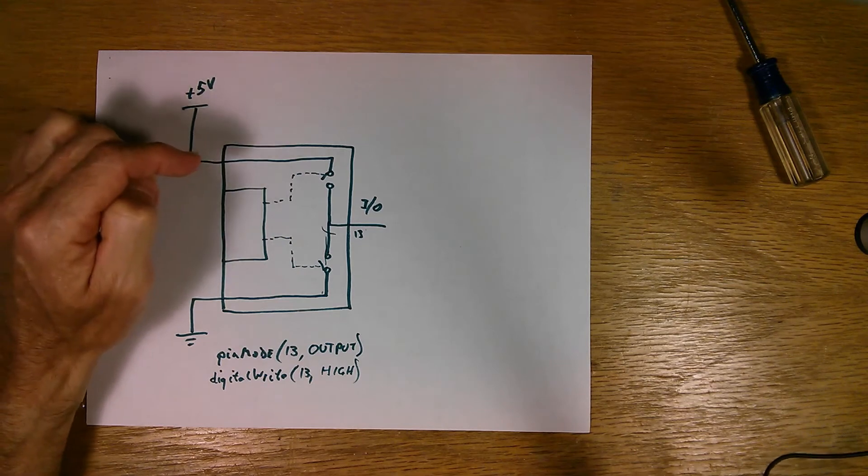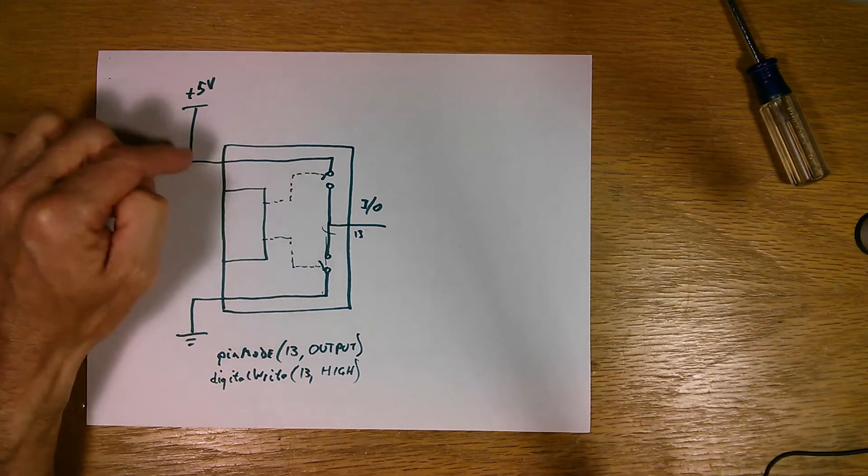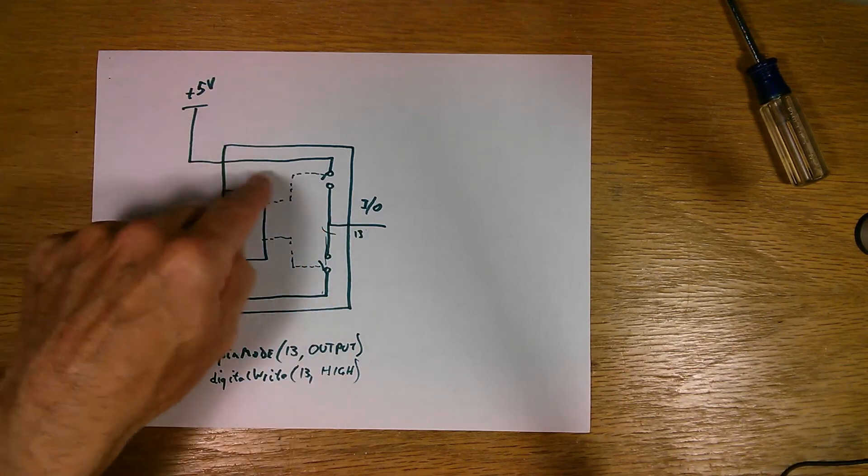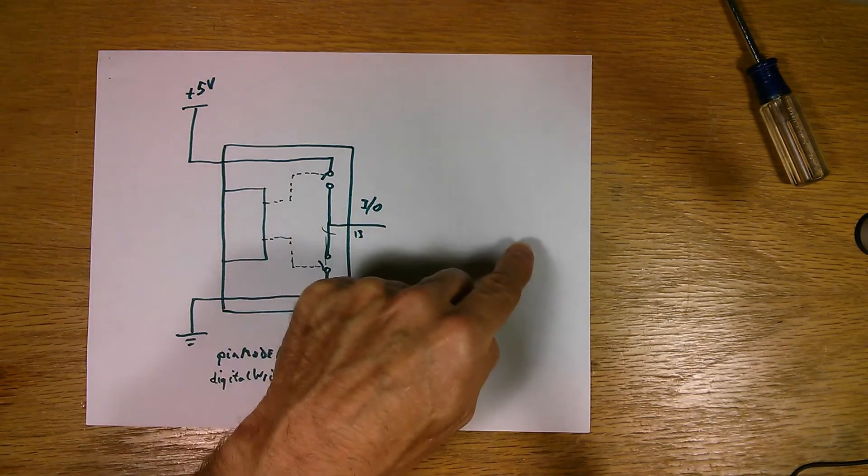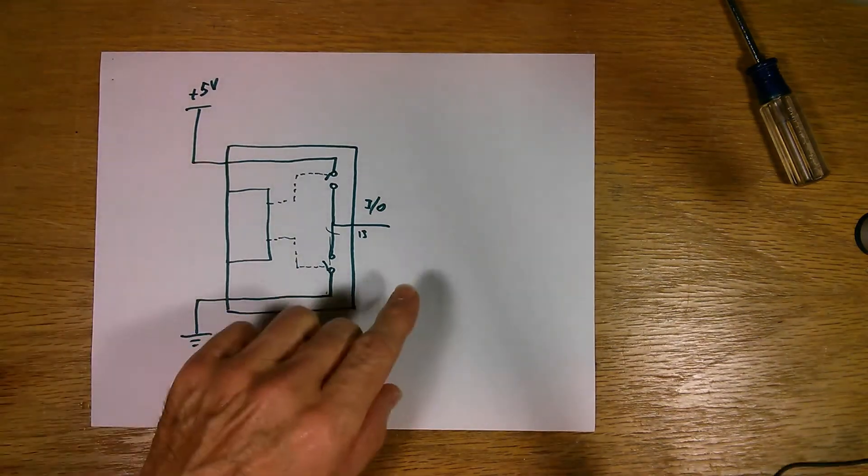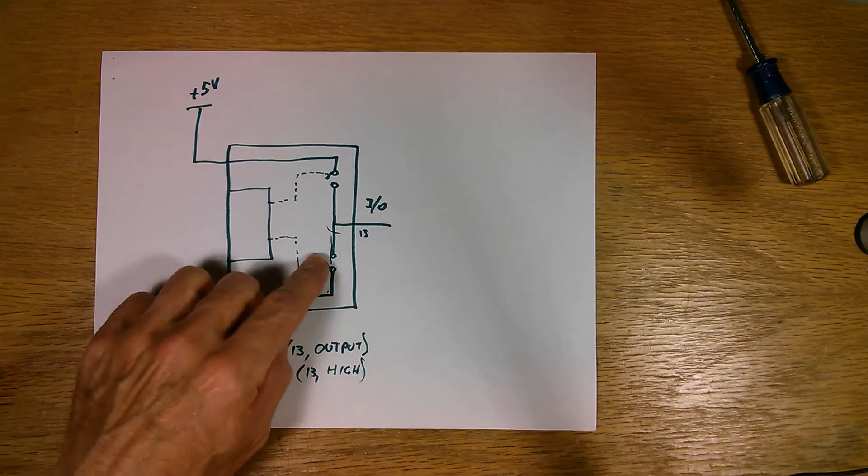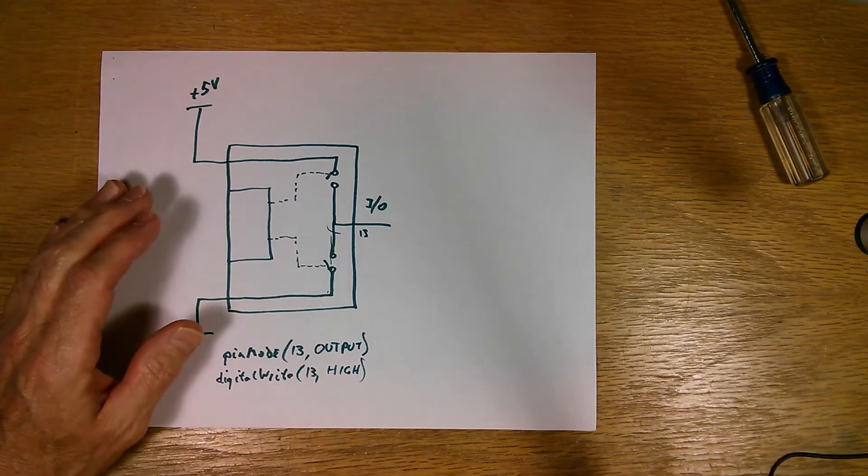First of all, there's only so much current that you can pass through either one of these switches. If we want to pass current out of the I/O pin this direction, we turn the upper switch on. That's called sourcing current. And if we want to bring current into the I/O pin to ground, we close this switch, and that's called sinking current.